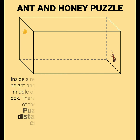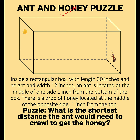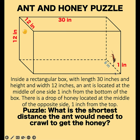Here's our math problem for today. Inside a rectangular box with a length of 30 inches and a height of 12 inches, an ant is located at the middle of one side, one inch from the bottom of the box. This distance here is 6 inches and another 6 inches because the ant is at the middle of a box with a width of 12 inches. On the opposite side, there's a drop of honey located at the middle of the opposite side, one inch from the top. What is the shortest distance that the ant would need to crawl in order to get the honey?